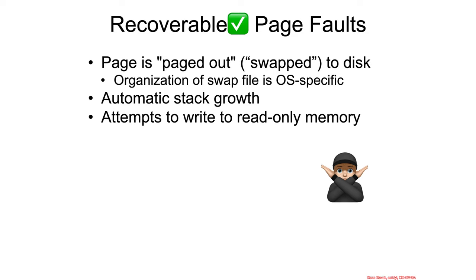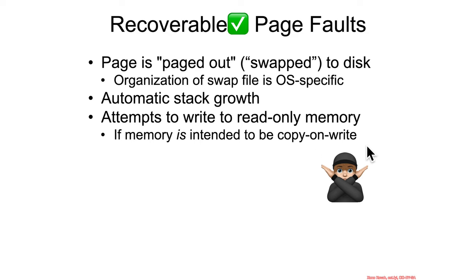Then there are also attempts to write to read-only memory. These are recoverable if that memory is intended to be what's called copy-on-write. If an operating system is trying to optimize RAM usage by using this notion of copy-on-write — wherein it tries to share memory amongst the different processes — then it can say, okay, now I can see that someone is trying to write to this process. Now I will split off and copy the written, dirty, changed page so that this other process that's trying to do the write will see something different than the original one, which has not actually written to this page. So that's another case in which it could be a recoverable page fault.